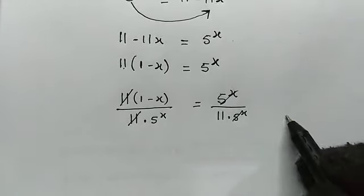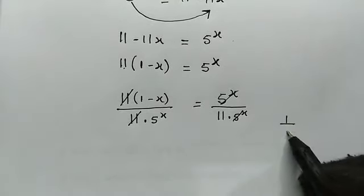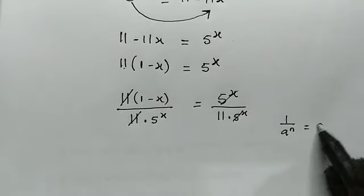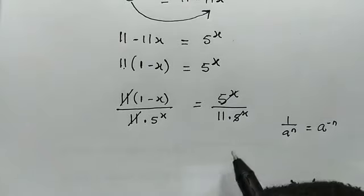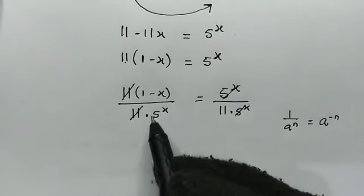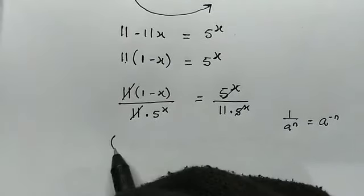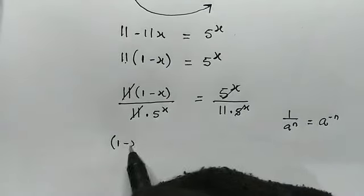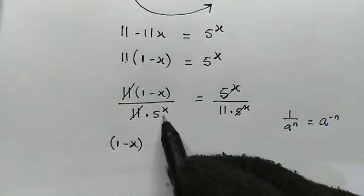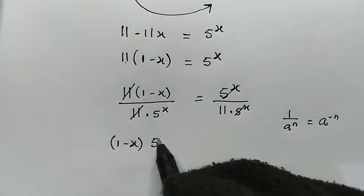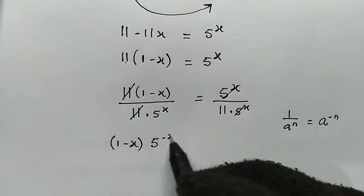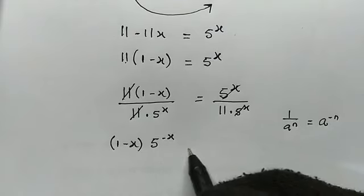Now let's take note of this: when we have 1 over a to the power of n, this is equal to a to the power of negative n. So here we have 1 minus x, and remember 1 over 5 to the power of x is the same as 5 to the power of negative x.